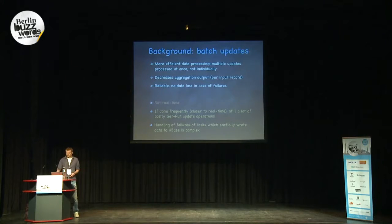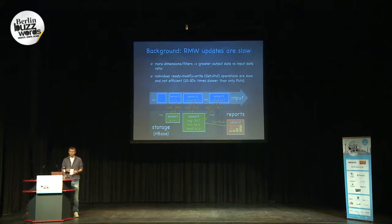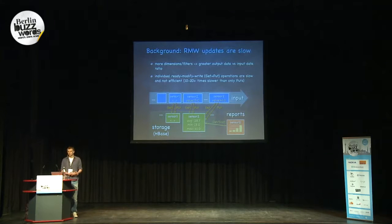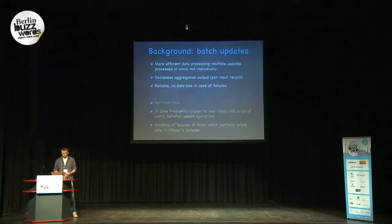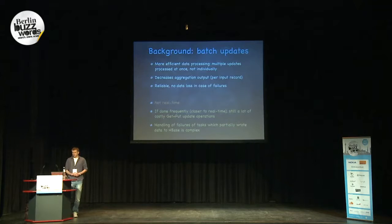There are basically a number of things you can do to improve update throughput. We tried to utilize HBase counters to save on round-trip operations from server to client, but in many cases it's just not enough. Counters are not flexible enough — you cannot update really complex data structures with their help, for example bitmaps and such. So in this case, batch-based processing is usually used. It helps to process data more efficiently in batches and reduces the amount of update operations you need to perform. And in fact, this is what we used initially in our services.